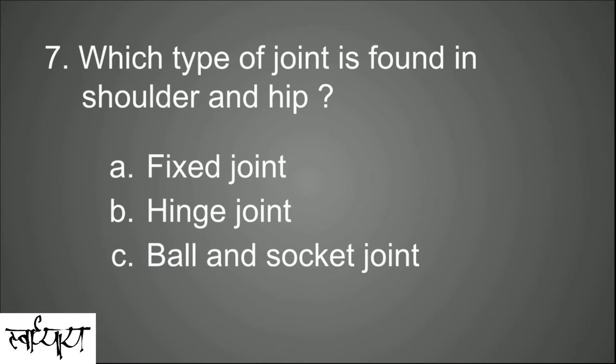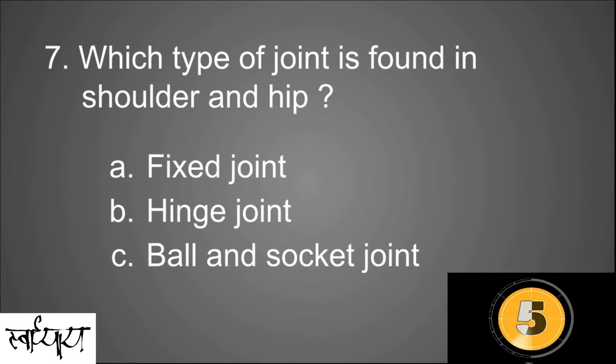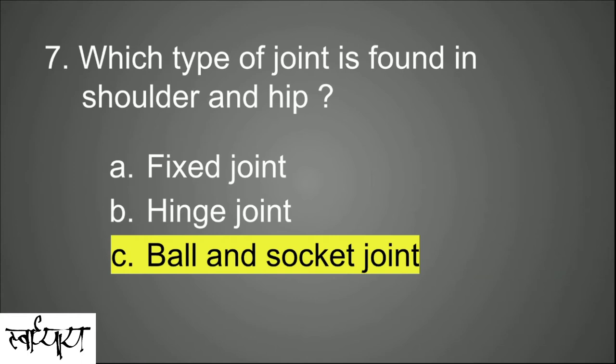Which type of joint is found in the shoulder and hip? The answer is ball and socket joint.